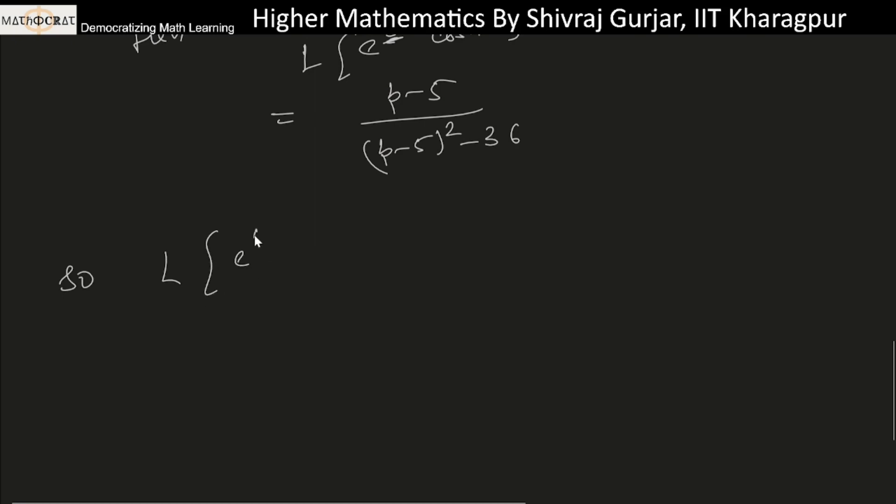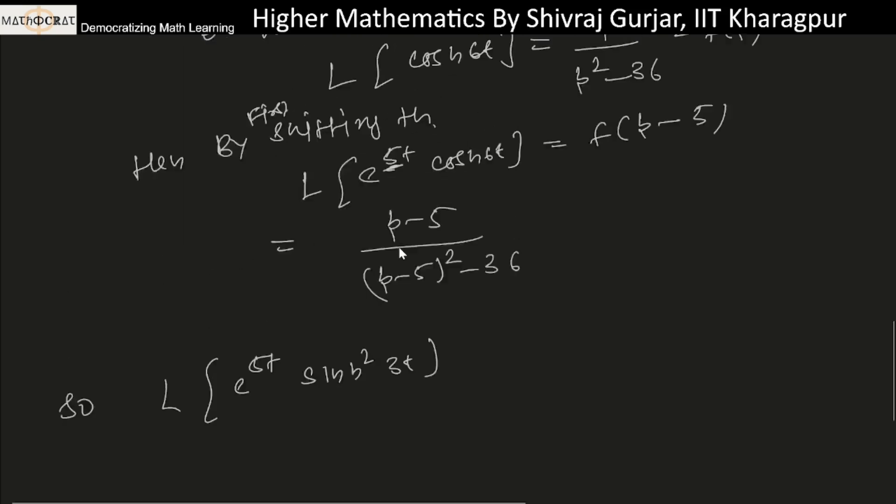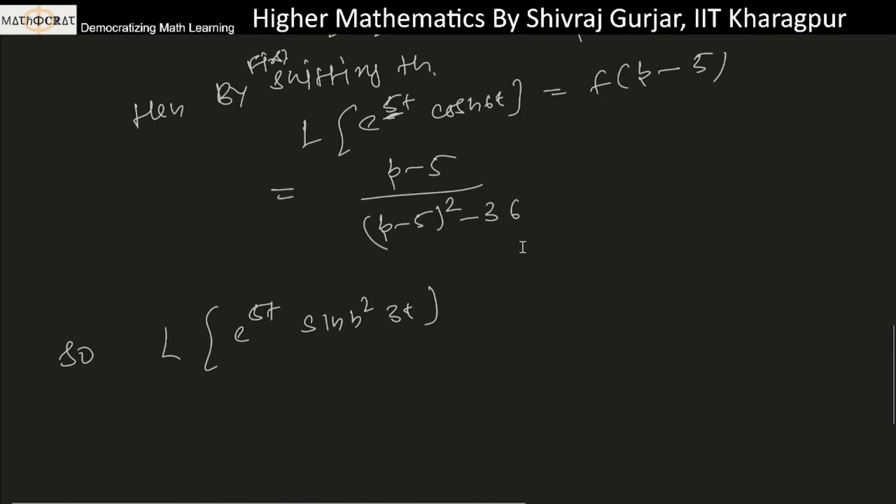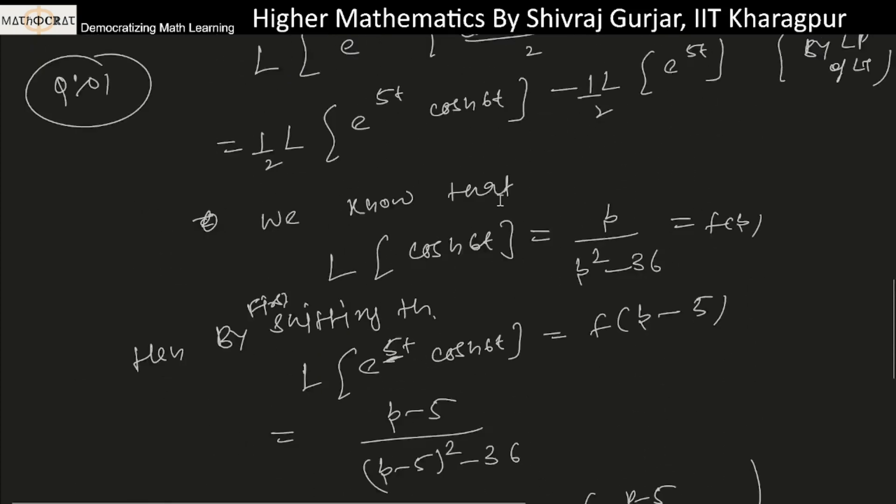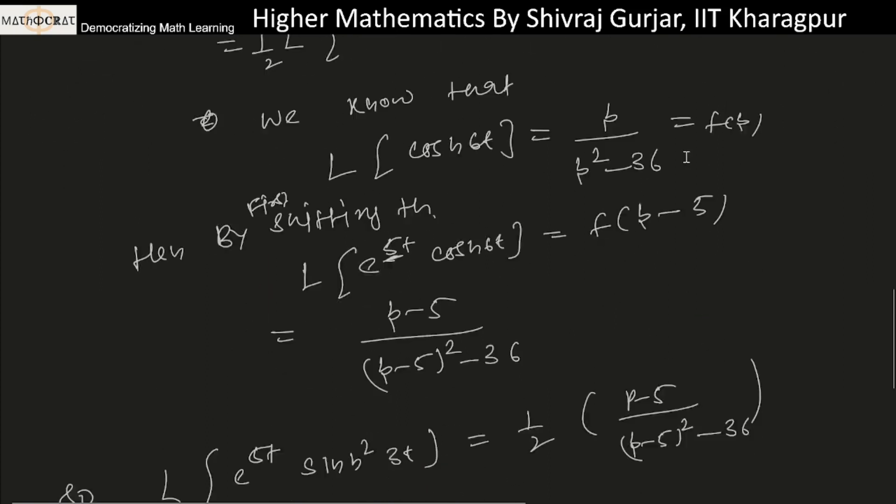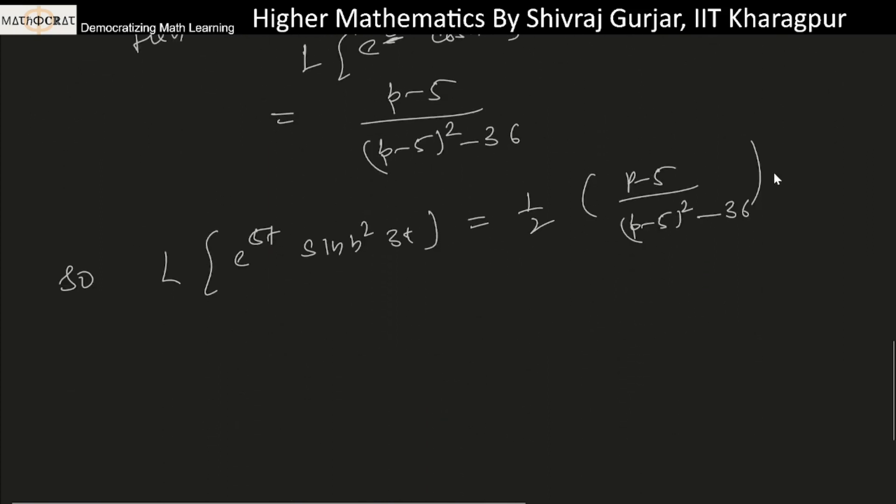Laplace of e to the power 5t times sinh squared 3t equals half of (p minus 5) divided by (p minus 5) squared minus 36, minus half. Laplace of e to the power 5t is nothing but 1 divided by p minus 5. This is the basic elementary function, so this will be the answer. I hope you're clear.